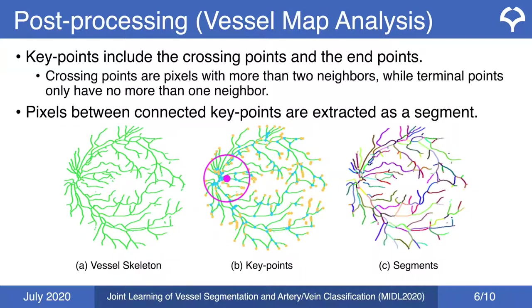Image A shows the vessel segmentation map. The large magenta dot in image B marks the cup center, the circle indicates the cup area, blue dots represent crossing points, and yellow dots represent terminal points. Image C shows the extracted segments, where different colors represent different segments.